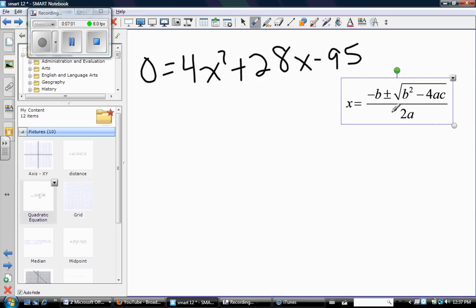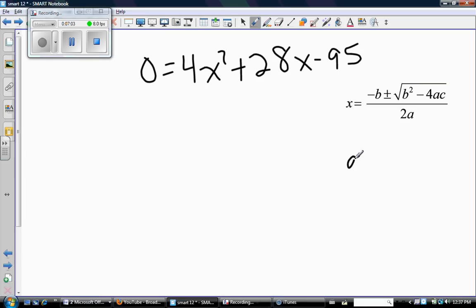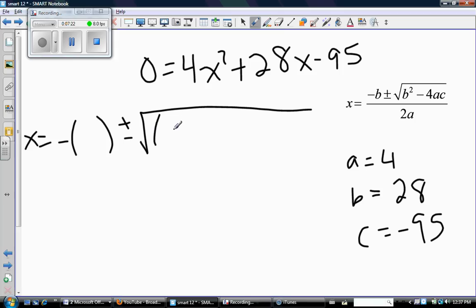So I know you haven't memorized, but here it is just in case. So a equals 4, b equals 28, and c equals negative 95. Okay. So substituting into the equation.